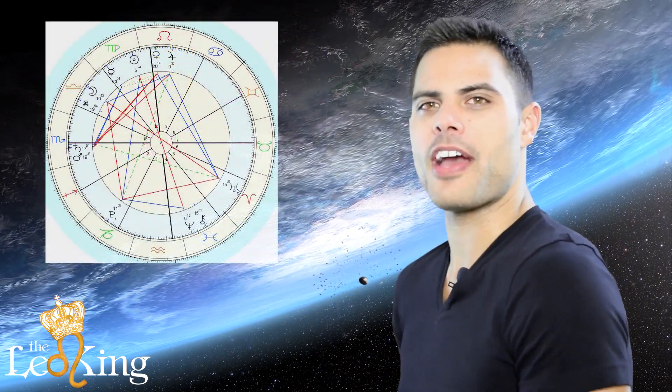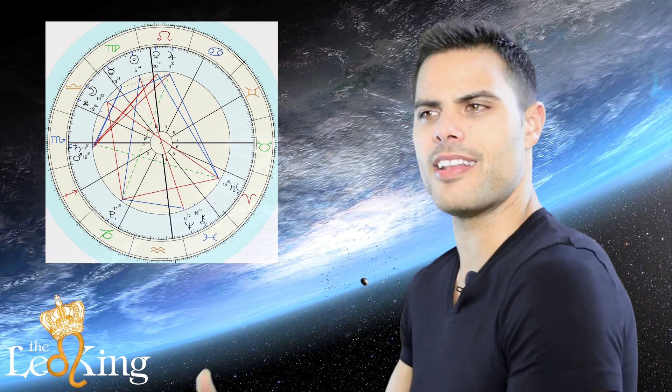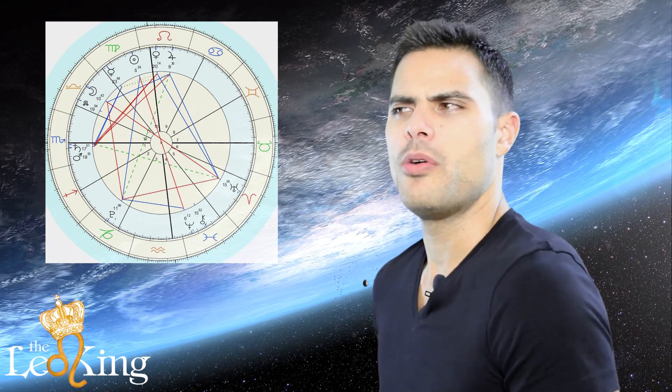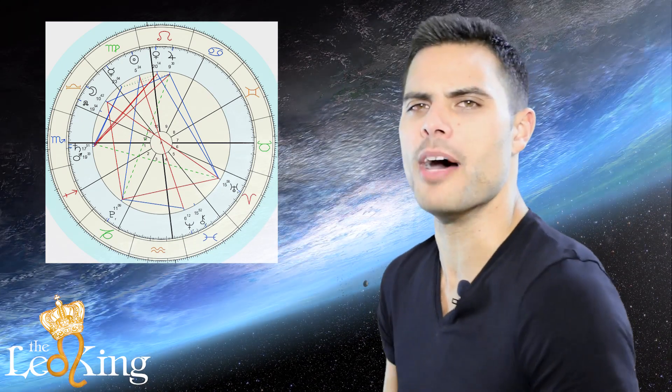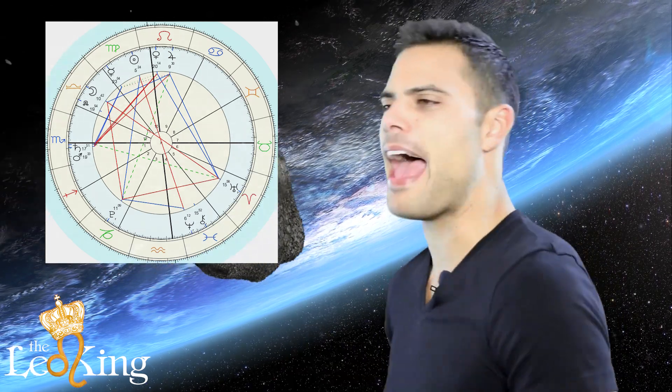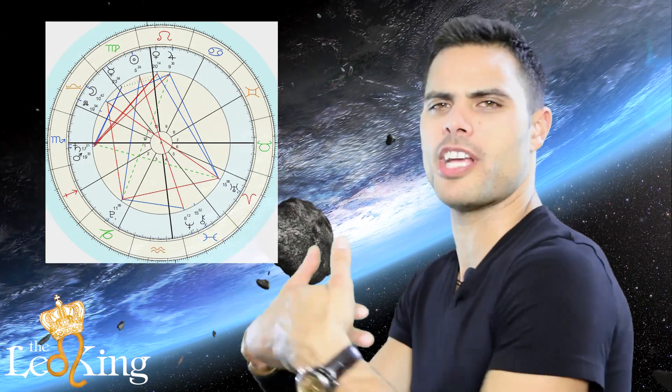Today we've got the moon still in Libra and the sun in Virgo, and there's a lot of aspects happening to both. Let's start with the moon. The moon in Libra wants to chill, feel great, harmony, balance, relationships, partnerships, connections.